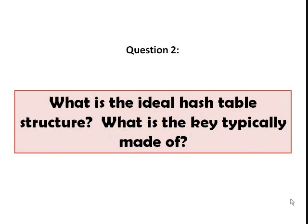Number two, what is the ideal hash table structure? What is the key typically made of? The ideal hash table structure would be an array of some fixed size that will contain your keys. A key could be an integer or a string with an associated value. An example of a key would be a name of an employee with the associated salary information as its value.